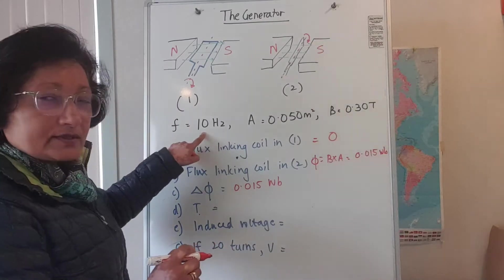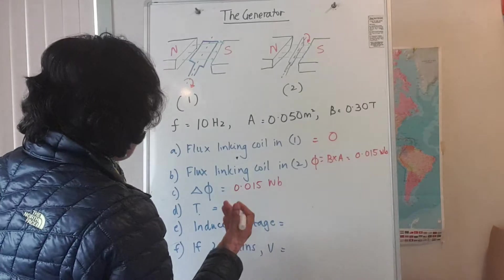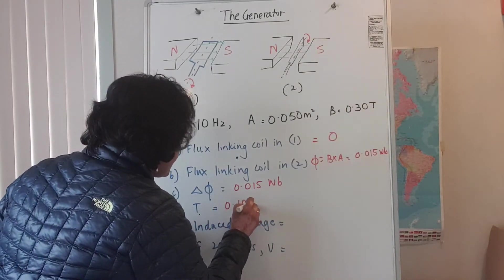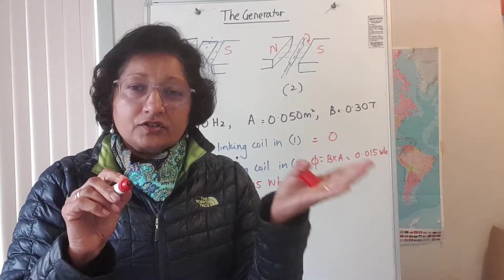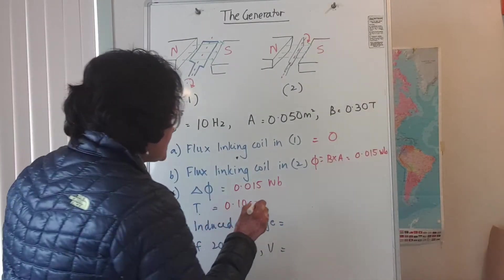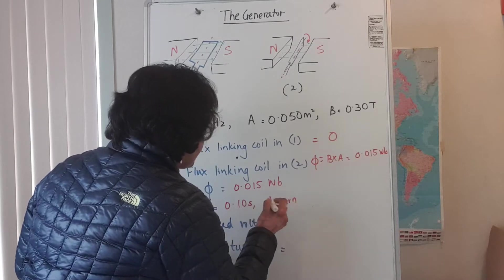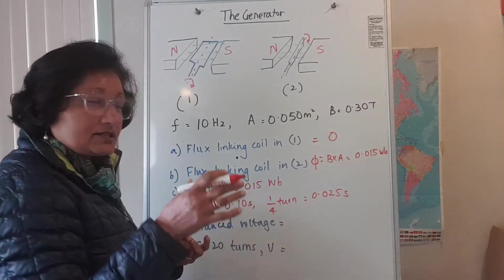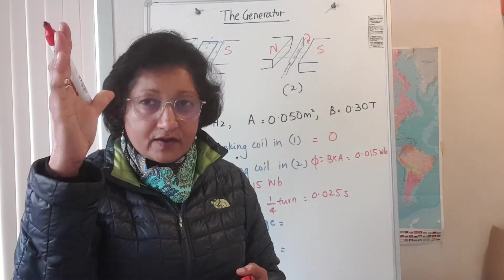If the frequency is 10 hertz, your period is 1 over the frequency, so 1 over 10 is 0.10 seconds — that is the period to do a whole circle. For a quarter turn, that's just this divided by 4, giving 0.025 seconds. That's how long it takes to go from the horizontal to the vertical position.